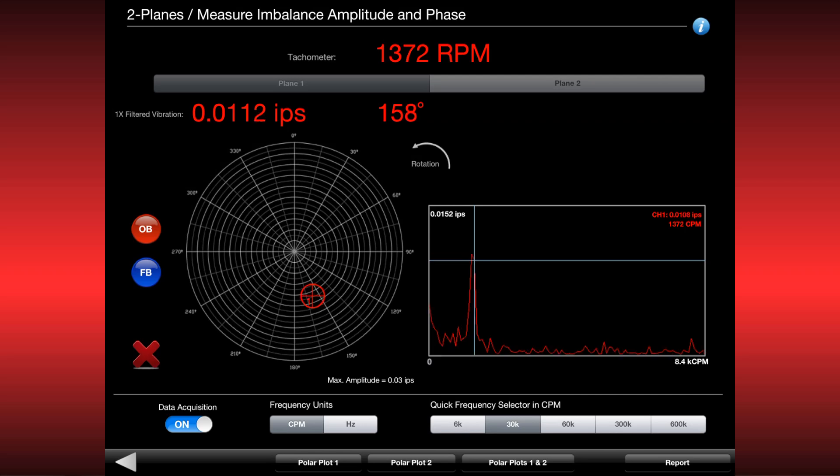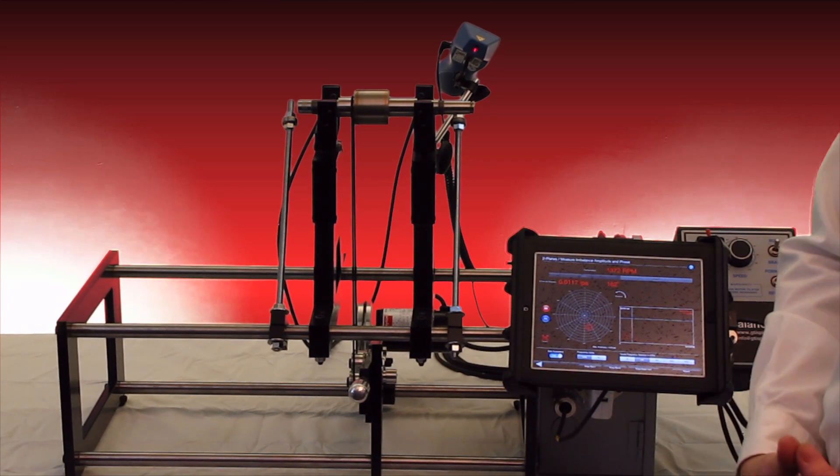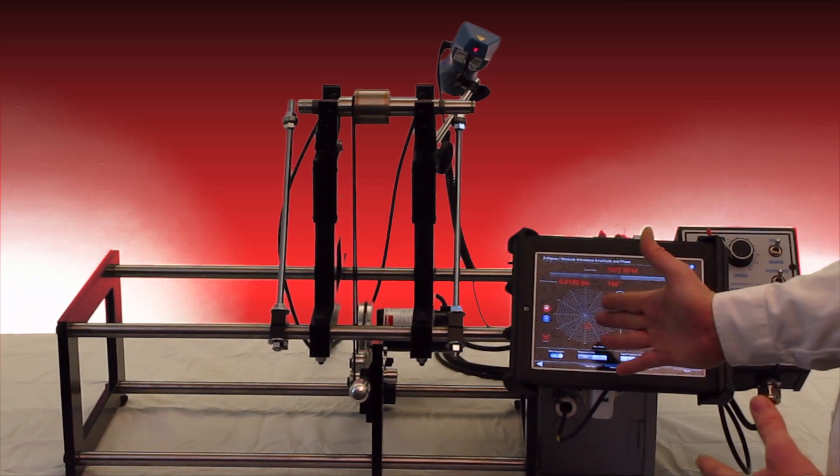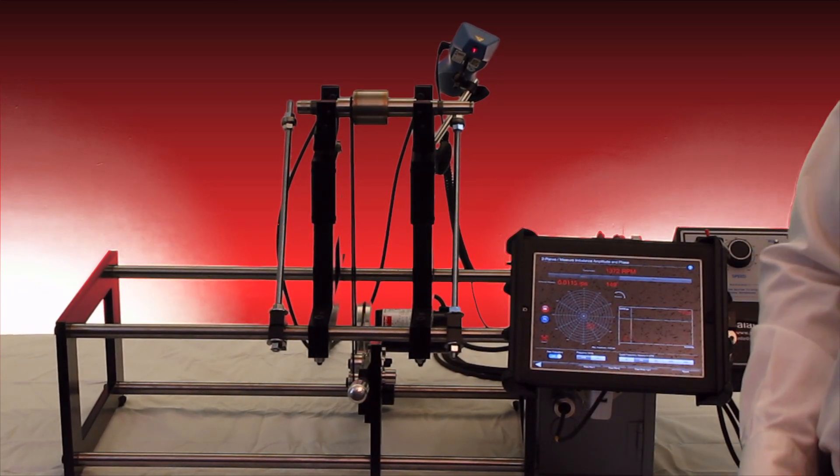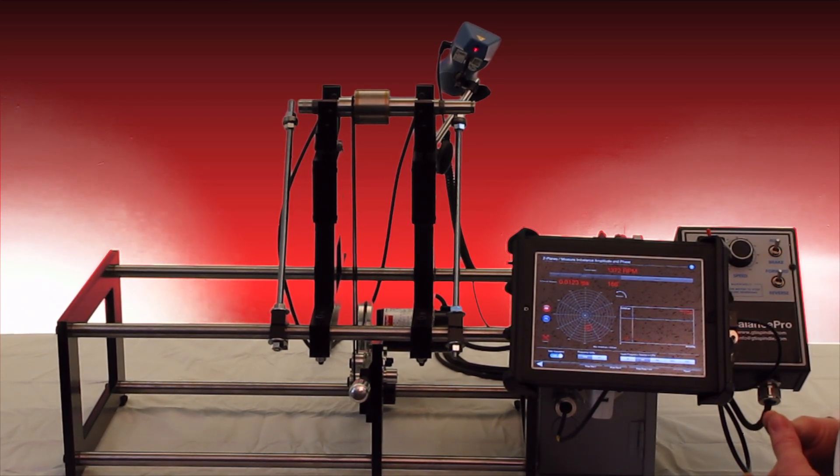Many balancing machines we've owned before, we're unable to know whether we did a good balance until we put the shaft into a spindle. With our machine, everything is running live here: our polar plot, our spectrum, and our tach speed, all running live while we're taking our first balance samples.